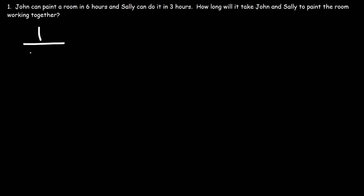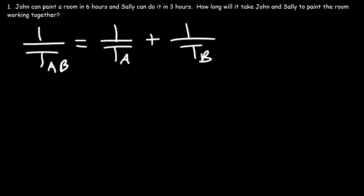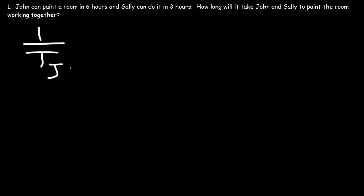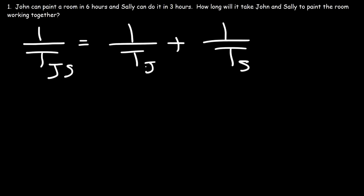The formula is: 1 over T_AB equals 1 over T_A plus 1 over T_B. Let's adjust the letters to the first letters for John and Sally — J for John, S for Sally. So T_JS represents the time it takes for John and Sally to complete the job together. T_J is the time it takes John to complete the task working alone, and T_S is the time it takes Sally to get the job done by herself.